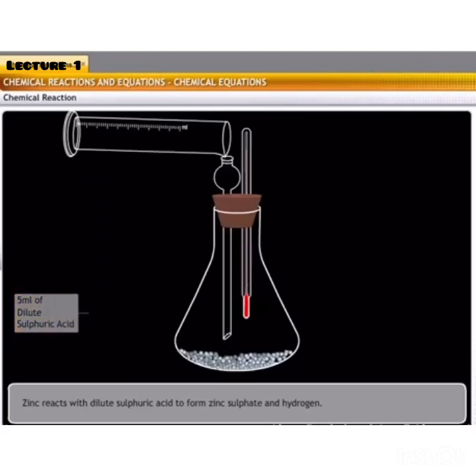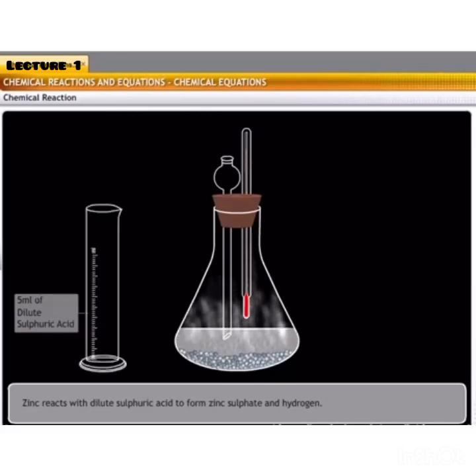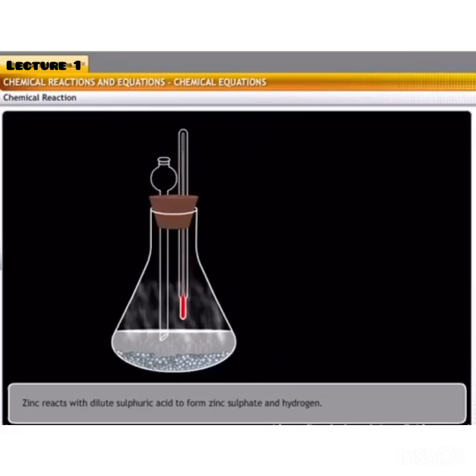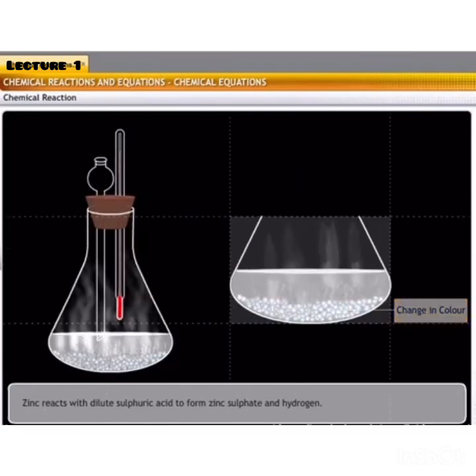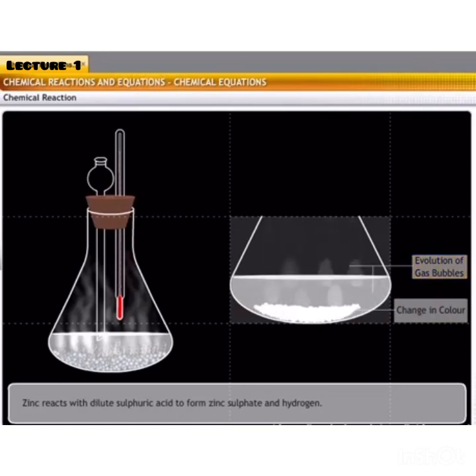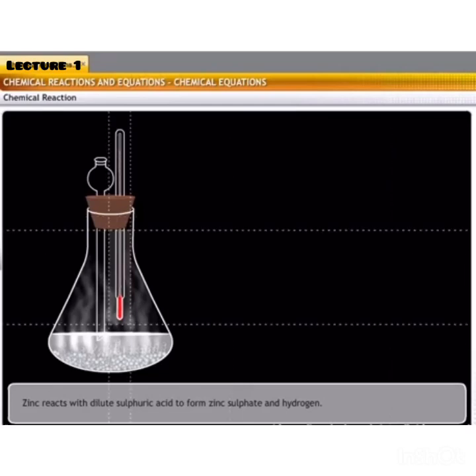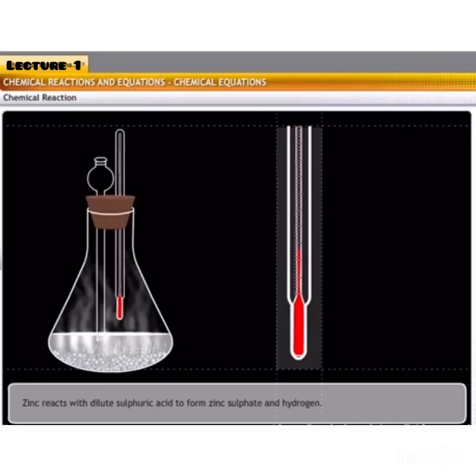Next pour some 5 ml of dilute sulphuric acid to the conical flask through the thistle funnel. We will see the colour of the zinc granules will change from blue grey to white. Some gas bubbles are also released from the solution. This is because zinc reacts with sulphuric acid to form zinc sulphate and hydrogen gas. Zinc sulphate is white in colour.